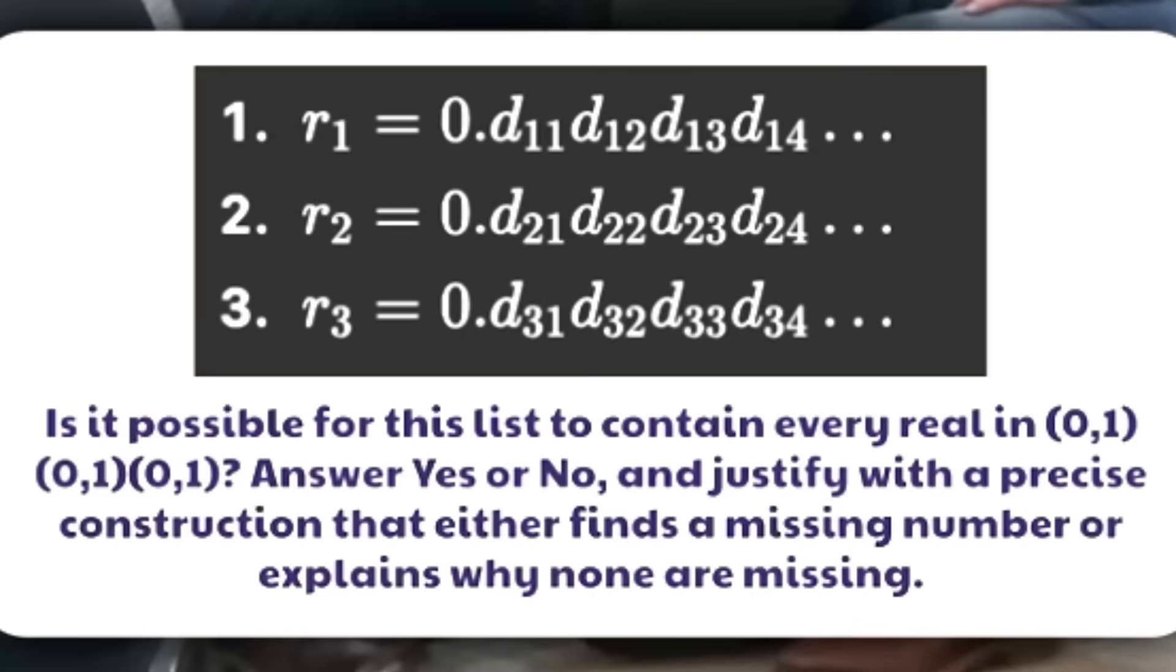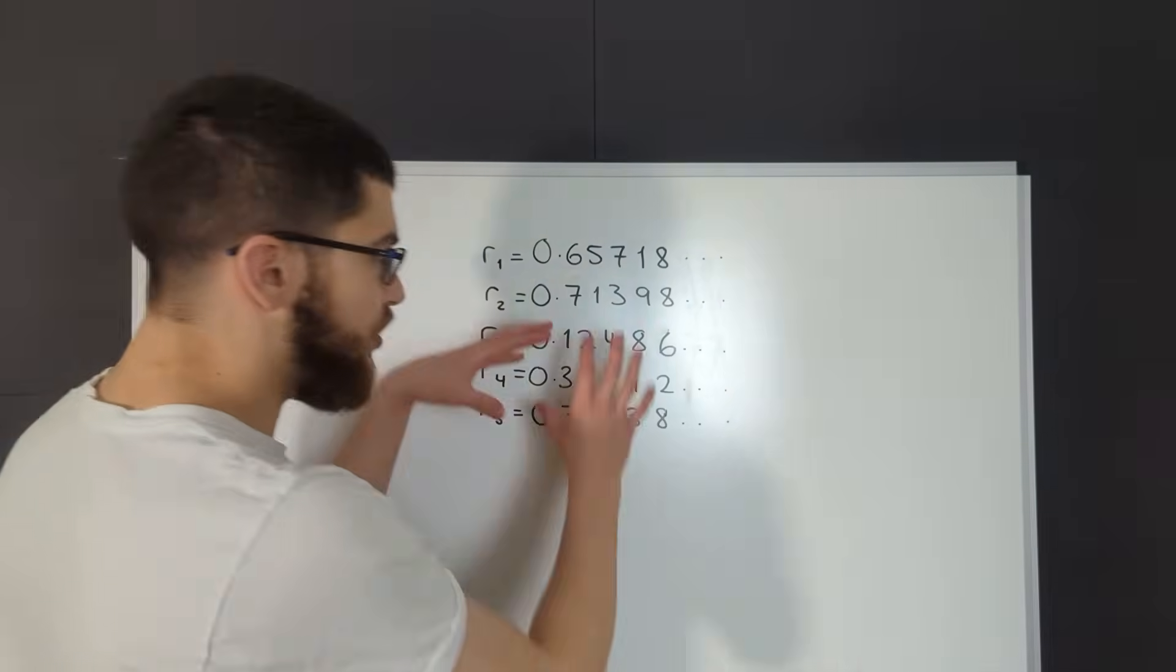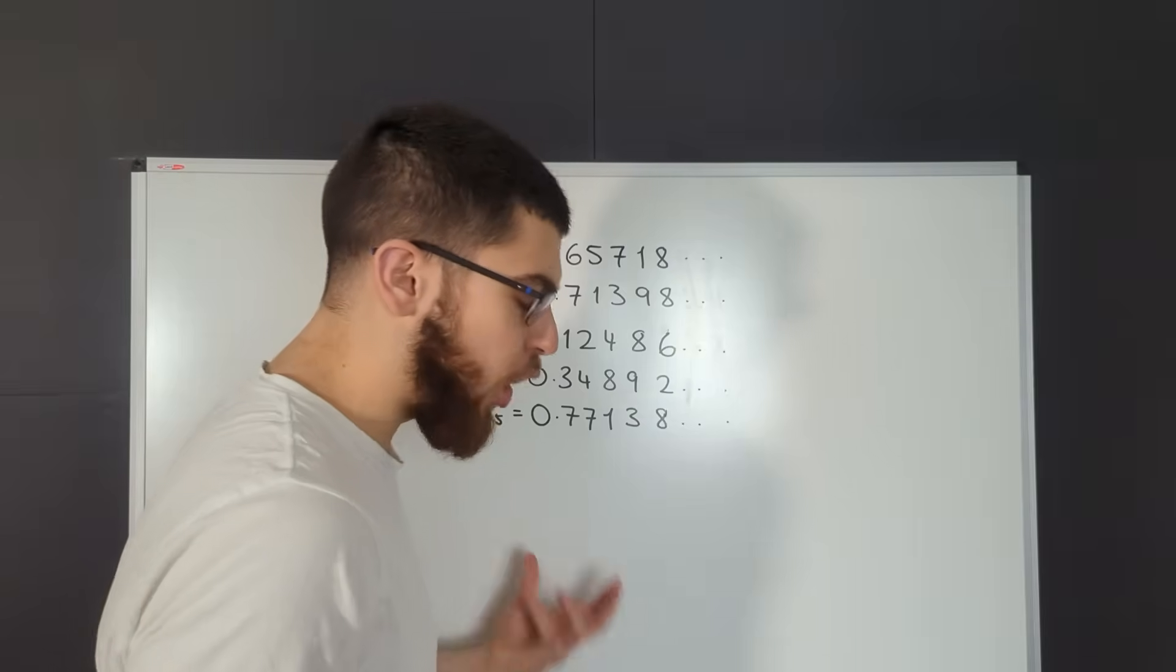Now the question contains D11, D12, D13, but these just represent any random digit. I've just replaced them with random digits so you can see what's really going on here.